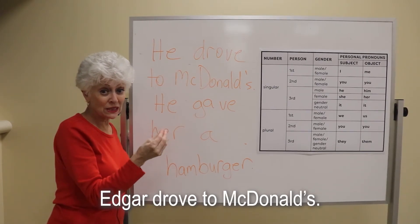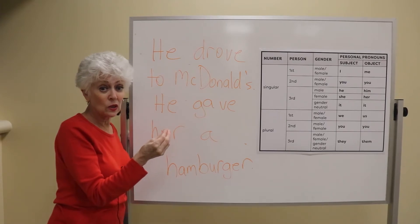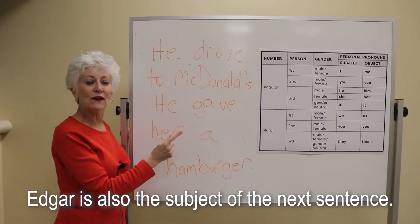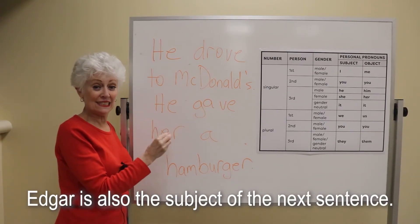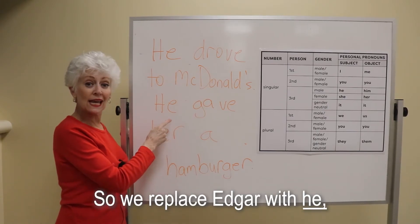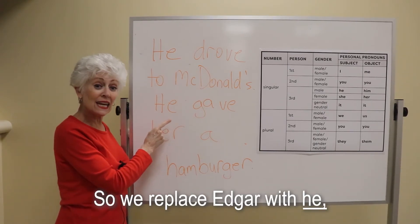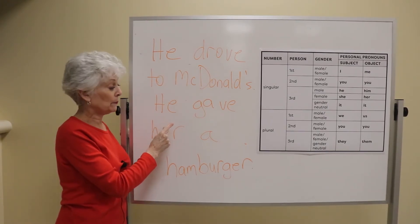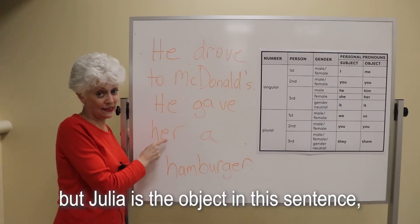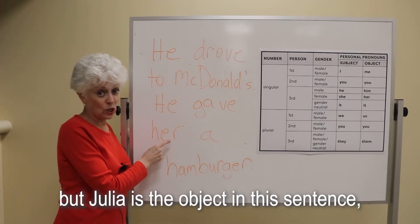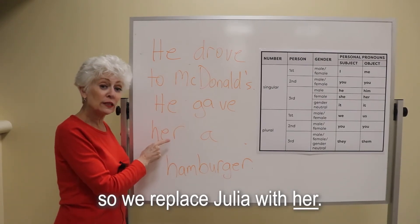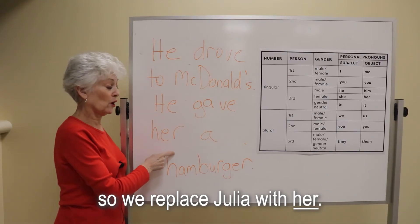We have to use he to replace Edgar, as Edgar is the subject of the sentence — Edgar drove to McDonald's. Edgar is also the subject of the next sentence, so we replace Edgar with he. But Julia is the object in this sentence, so we replace Julia with her.